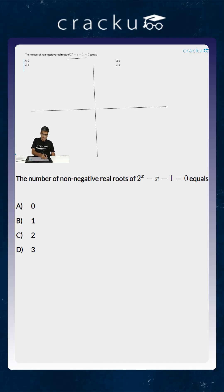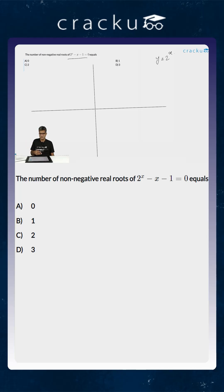How does the graph y equals 2 to the power x look like? It looks something like this — when x is very low, say minus infinity or minus thousand, then y will be close to 0.